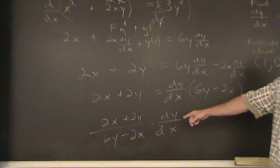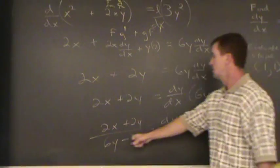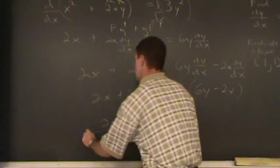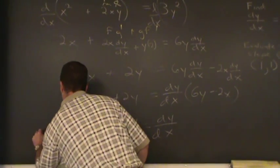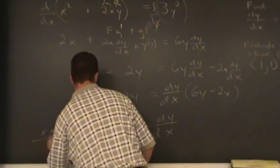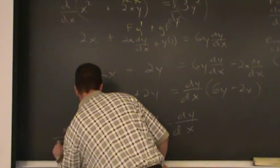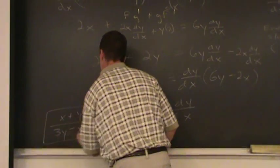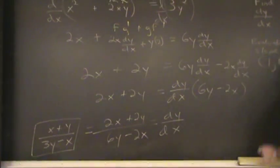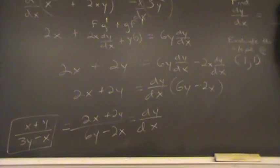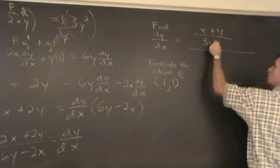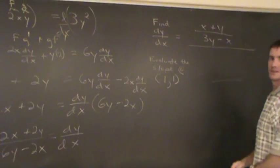Now everyone, if you wanna simplify this expression right here, we have 2, 2, 6, and 2. We can factor out a 2 from both expressions and cancel them. We'll be left with x plus y all over 3y minus x. So dy/dx is x plus y over 3y minus x.